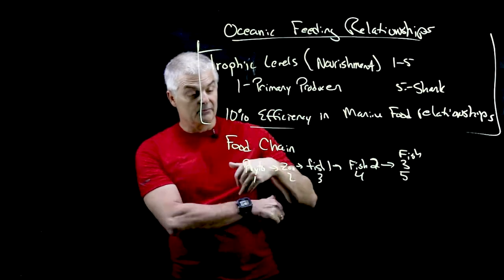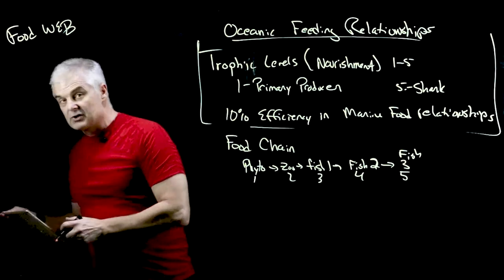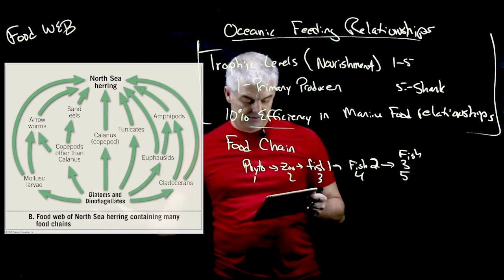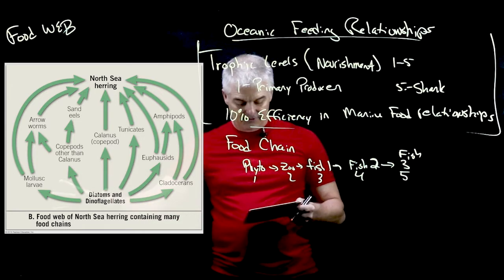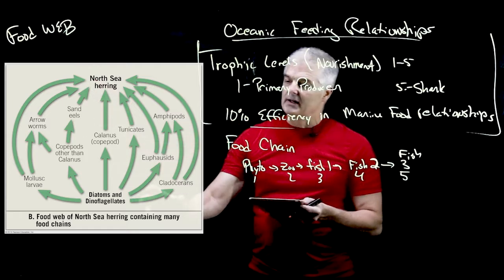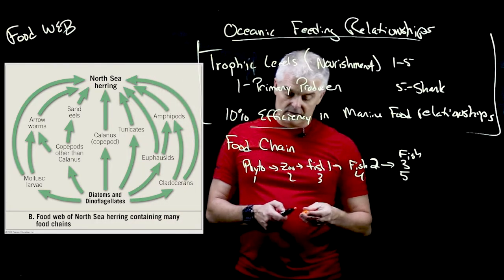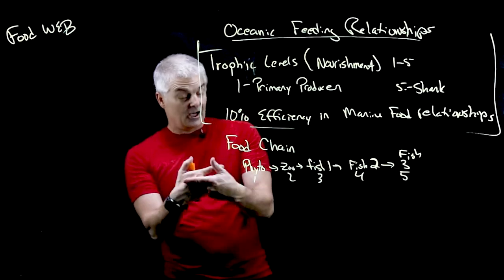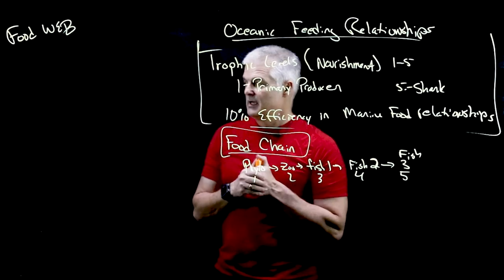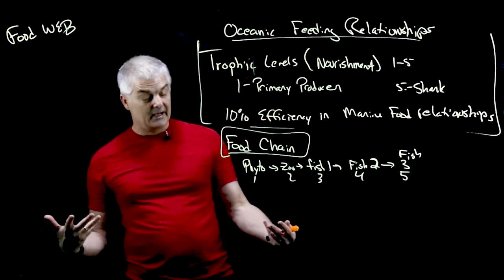What's more realistic is something called a food web. Take a look at this picture — this is the North Sea herring. You start with diatoms and dinoflagellates, then they get eaten by different creatures, who get eaten by different creatures, forming much more of a web. The North Sea herring doesn't just eat one thing — it's more complex. So if one creature goes away, it can still survive. If all you eat is one thing and that one thing goes extinct, you go extinct. Food chains are not as advantageous as a food web.